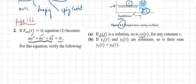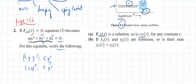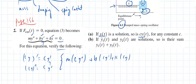So is cy of t a solution? Let's verify: if y is a solution, is cy also a solution? That means if I take a derivative, that's c·y-prime, and if I take another derivative, that's c·y-double-prime, because c is a constant. Now if I plug those in: the second derivative term is c·y-double-prime, plus b times the first derivative c·y-prime, plus k times cy. Can't I factor a c out of each one of those?